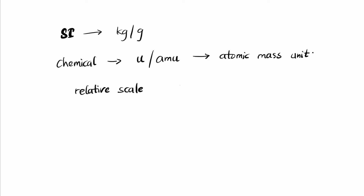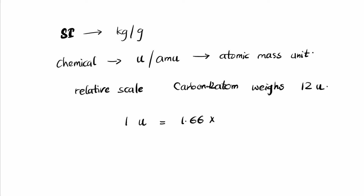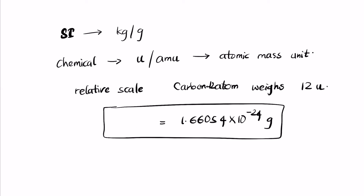The atomic mass unit standard comes from a relative scale where we consider that a carbon-12 atom weighs 12 units. Taking the actual mass, one AMU is equal to 1.6654 × 10⁻²⁴ grams. This is the equivalent conversion for one atomic mass unit, so a hydrogen atom would weigh 1.008 AMU.